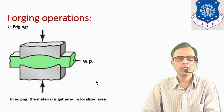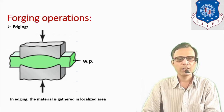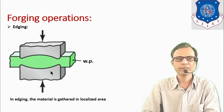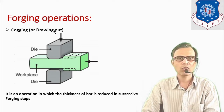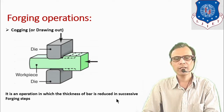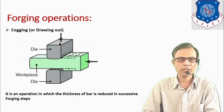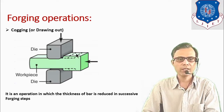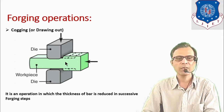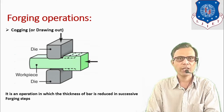The next process is the edging process, which is similar to fullering but the difference is that the material is gathered in a localized area. Then there is the cogging operation, sometimes also known as the drawing out operation. In this operation, thickness is reduced in successive forging steps. The workpiece is pressed between two dies and the dotted lines in the diagram indicate the successive steps, by which the required shape and size of the body is obtained.